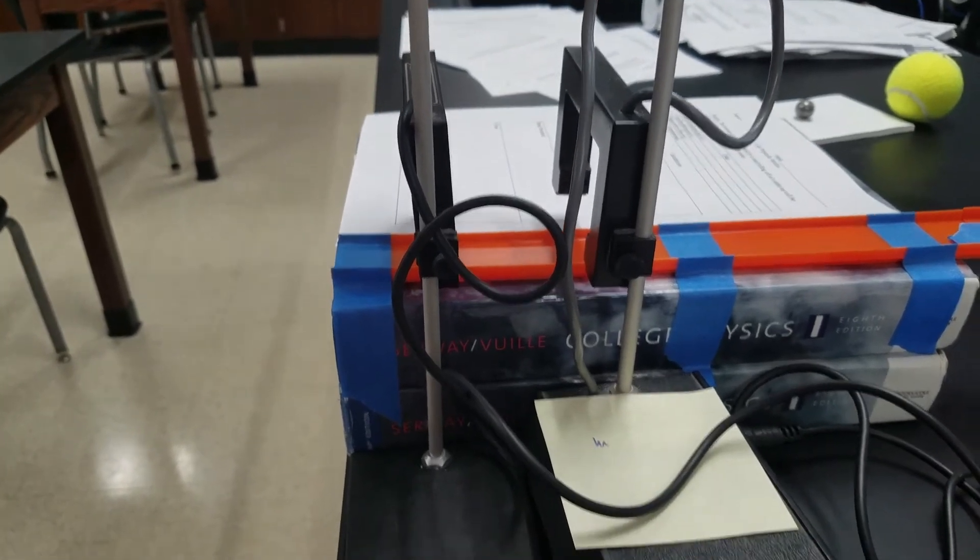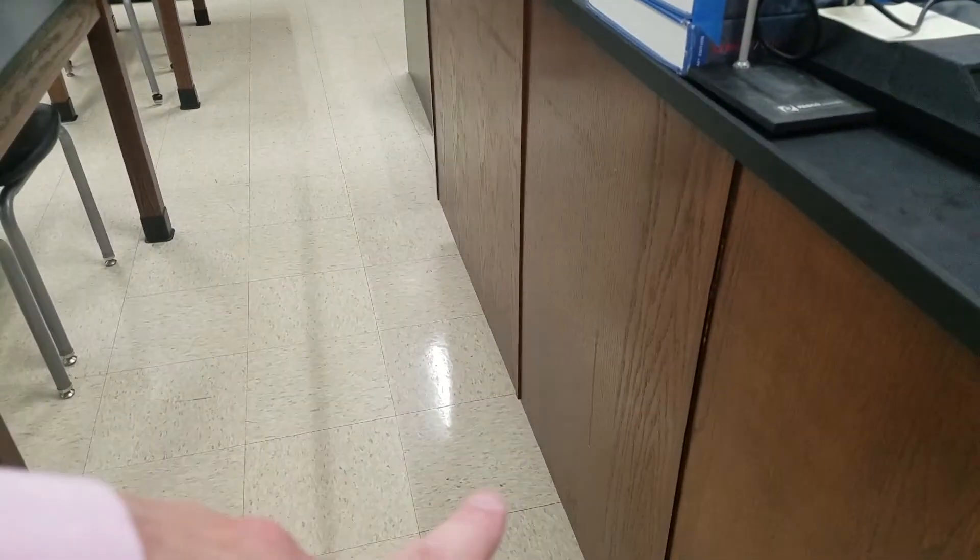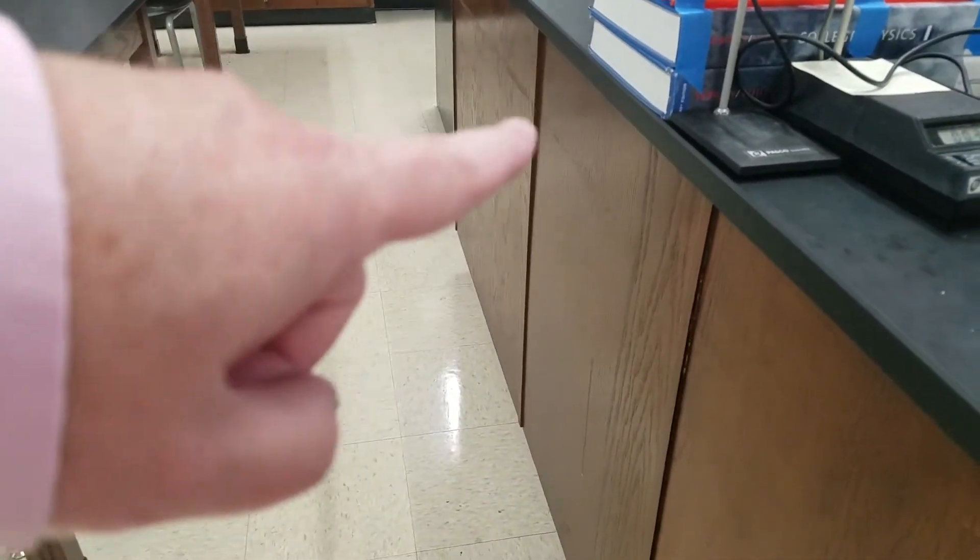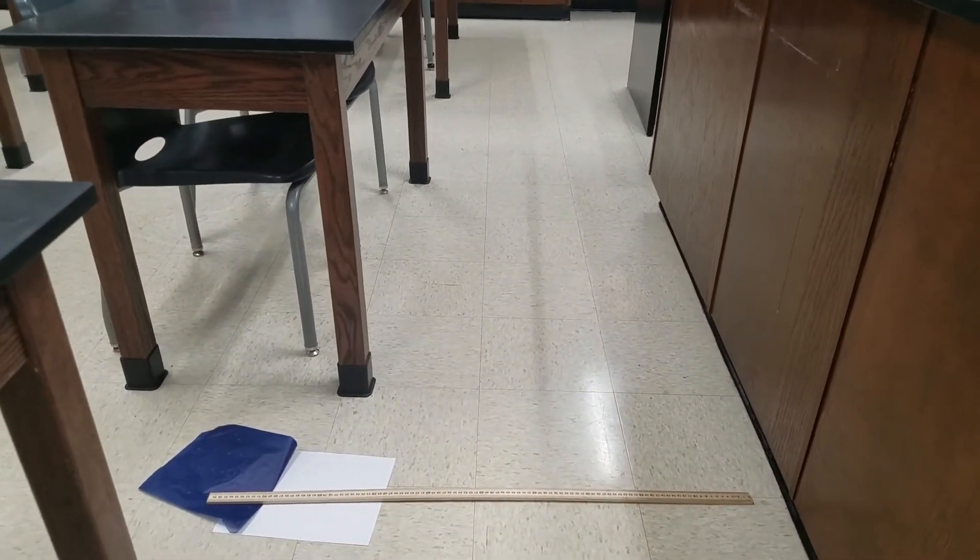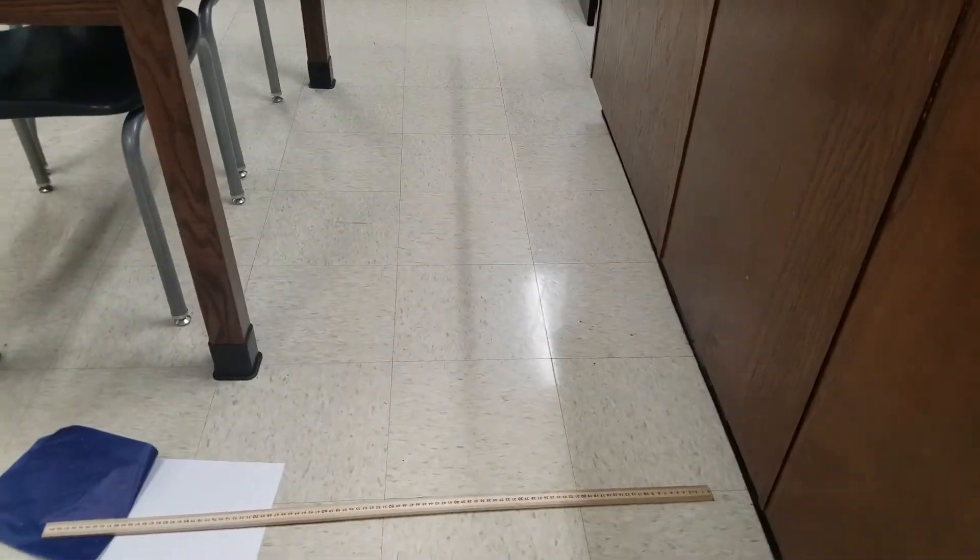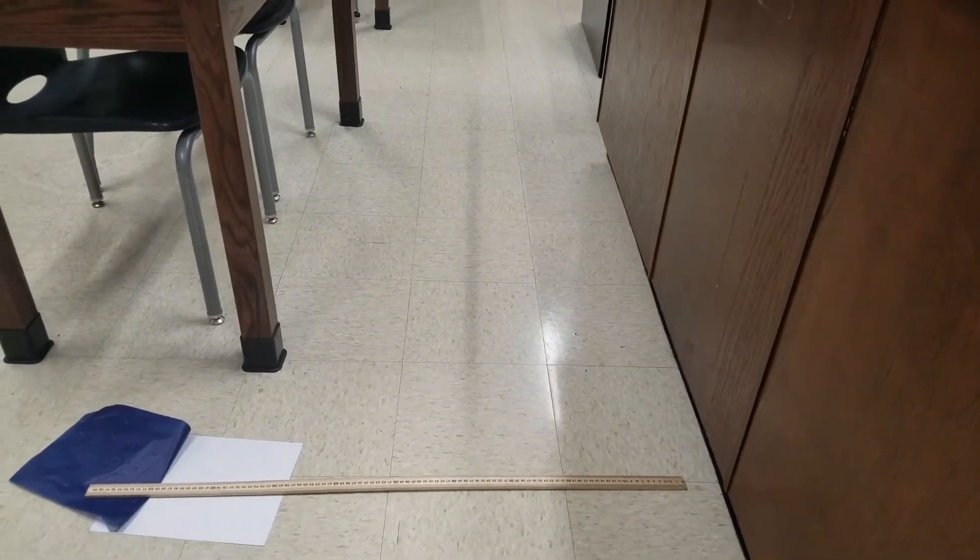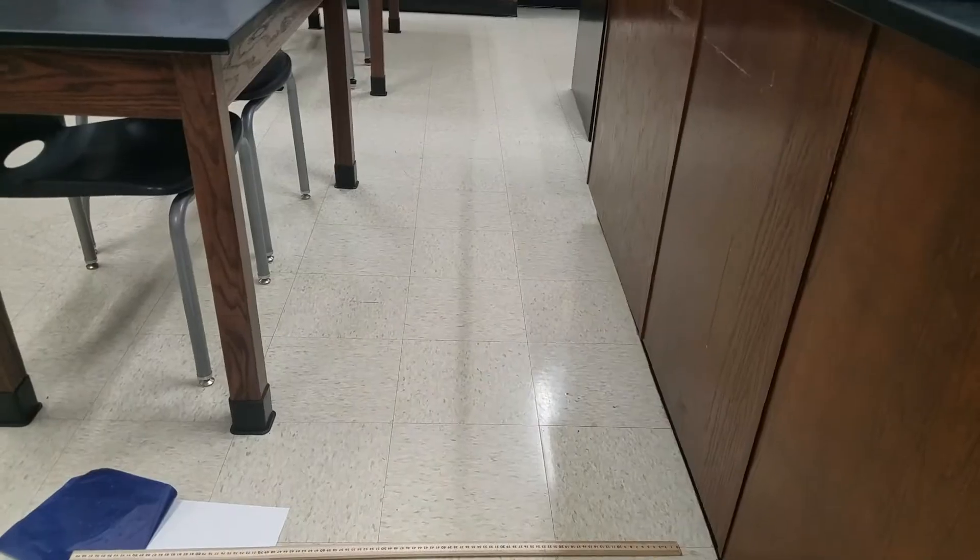So we use that distance and that time to figure out the velocity. It fell from about one meter from the floor. So we use that height to figure out the time of flight. Then using that velocity and the time of flight I should be able to figure out the range which we measure to be around 83.7 centimeters. And we can calculate the predicted range and see how well they match.